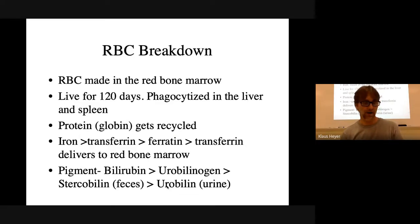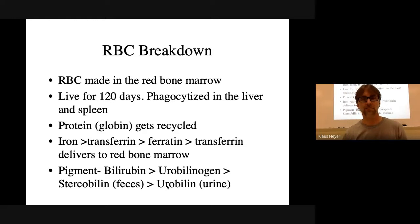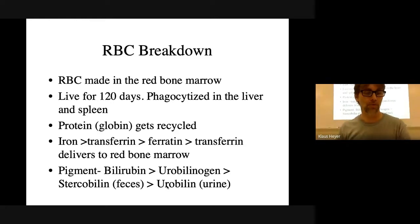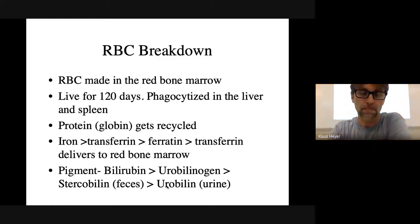That's why your urine is yellowish and your feces are brown — it comes from waste pigment from your blood. The brown color of feces and the yellow color of urine are both derived from the breakdown of blood pigment.